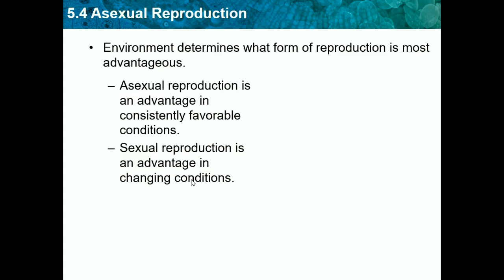Another disadvantage of asexual reproduction is that if one organism in your population catches a certain disease, basically your whole population will get it, because you just keep producing clones of yourself. It's like cancerous cells — if one catches it, it keeps spreading and they'll all eventually get the disease.